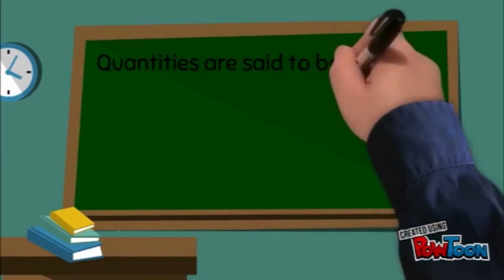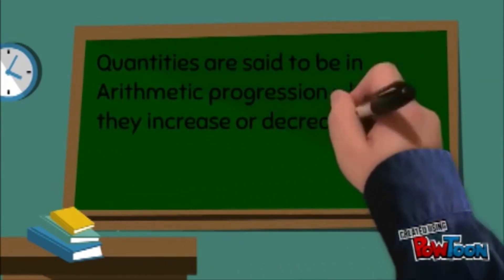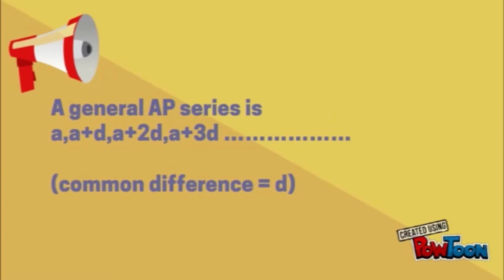Quantities are said to be in arithmetic progressions when they increase or decrease by a common difference. So, a general arithmetic progression is a, a+d, a+2d, a+3d and so on. Here, d is common difference.